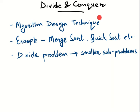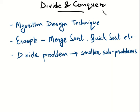One very well-known and widely used design technique is called divide and conquer. If you have heard of merge sort and quick sort — those are sorting algorithms — they are based on divide and conquer technique. Even binary search is based on divide and conquer technique. So it is a very widely used and popular technique.